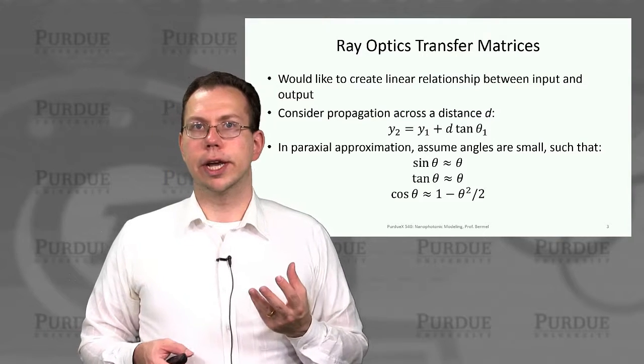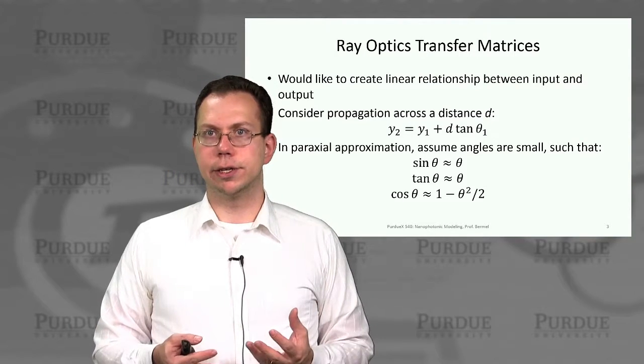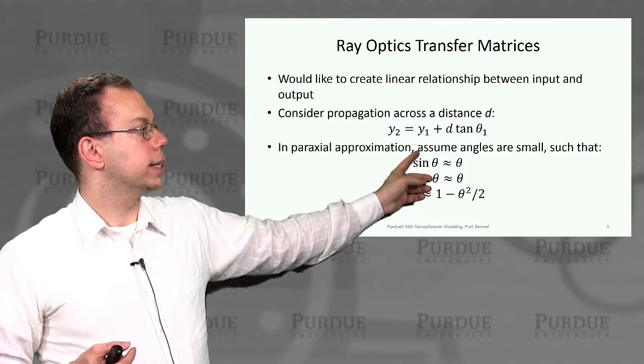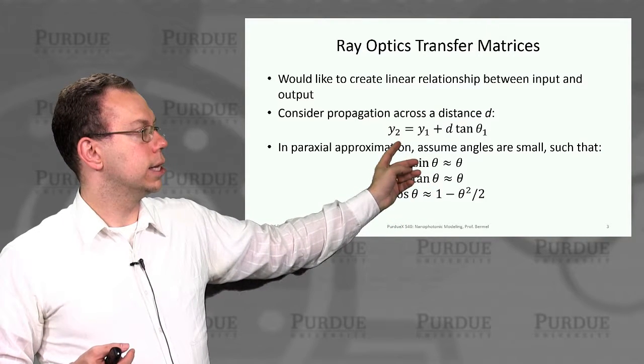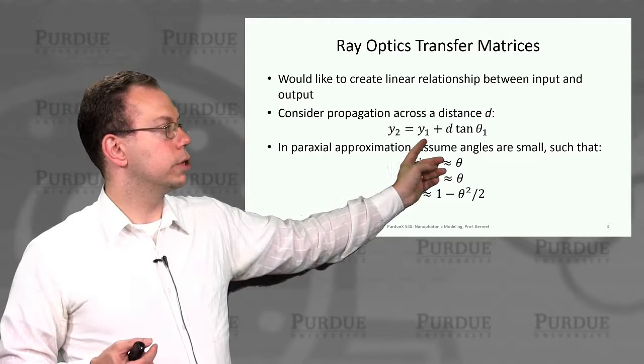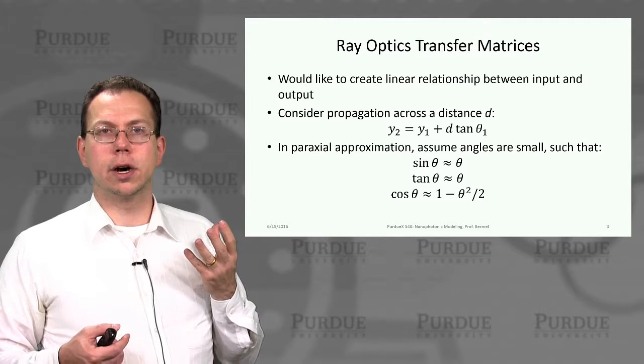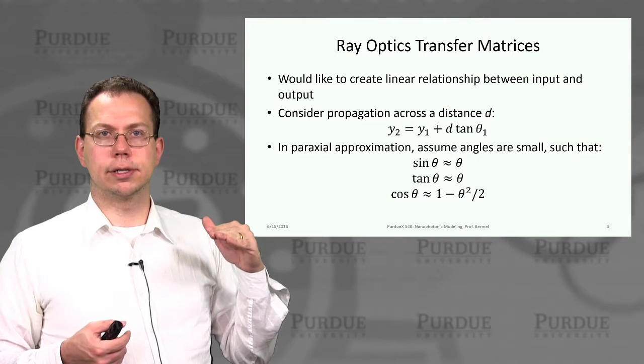To create a linear relationship and allow us to use the transfer matrix method, although technically you can write that the output equals the input plus d times tangent of angle theta 1.